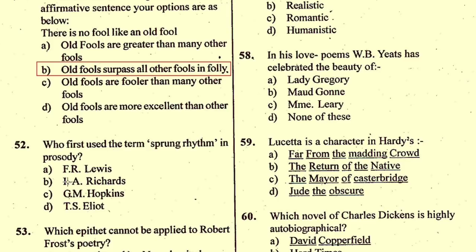Question number 52: Who first used the term 'sprung rhythm' in prosody? Sprung rhythm is an irregular system of prosody developed by the 19th-century English poet Gerard Manley Hopkins. The right option is C.